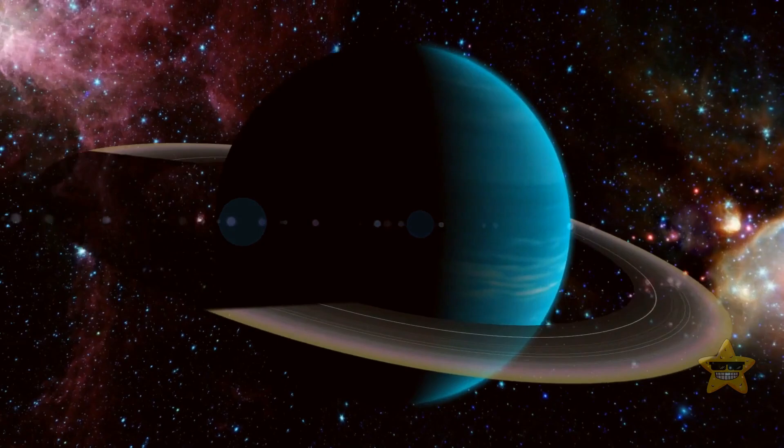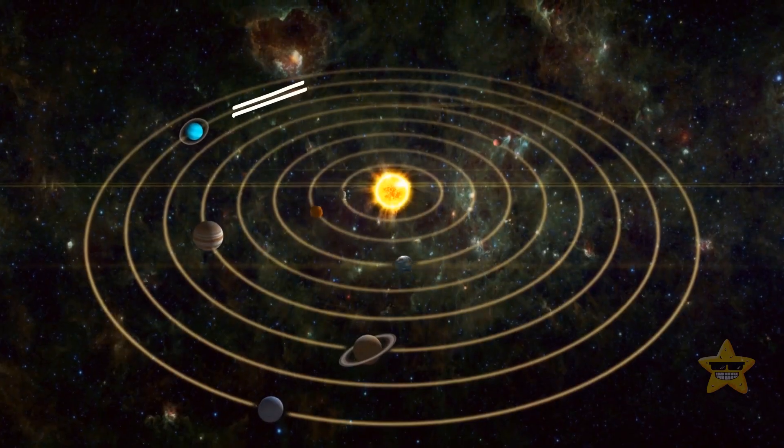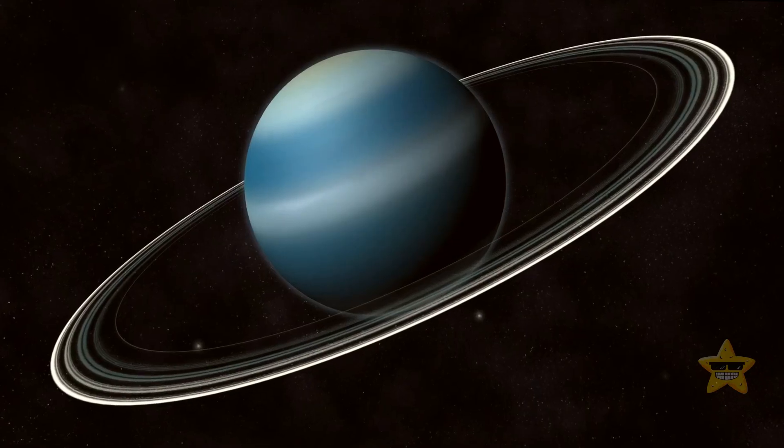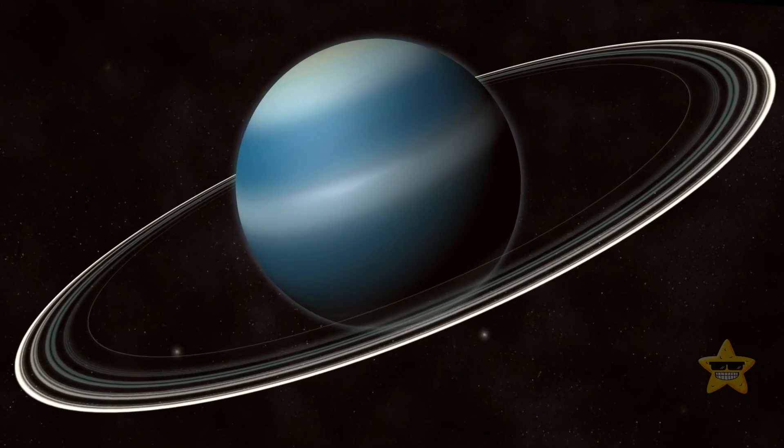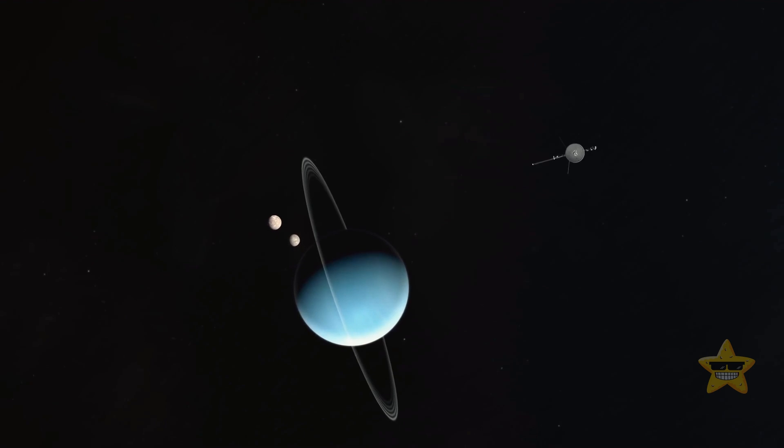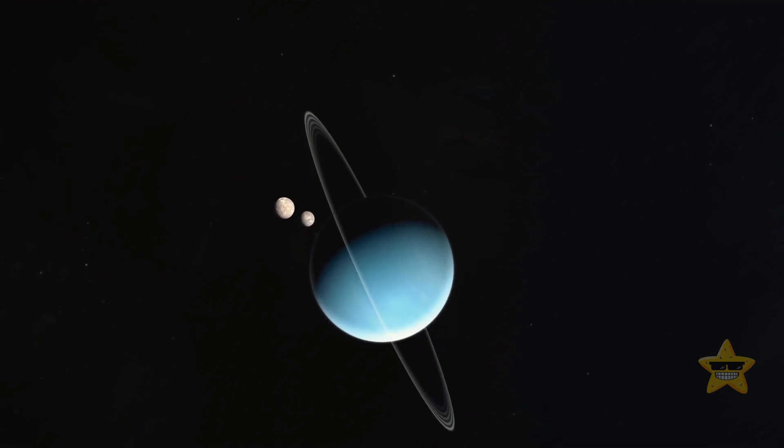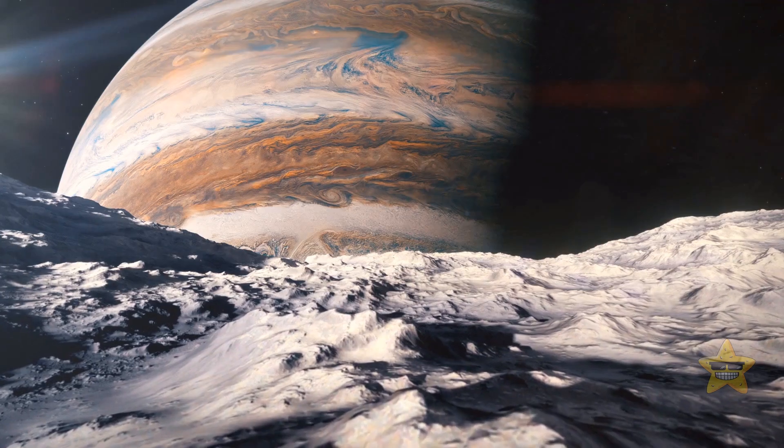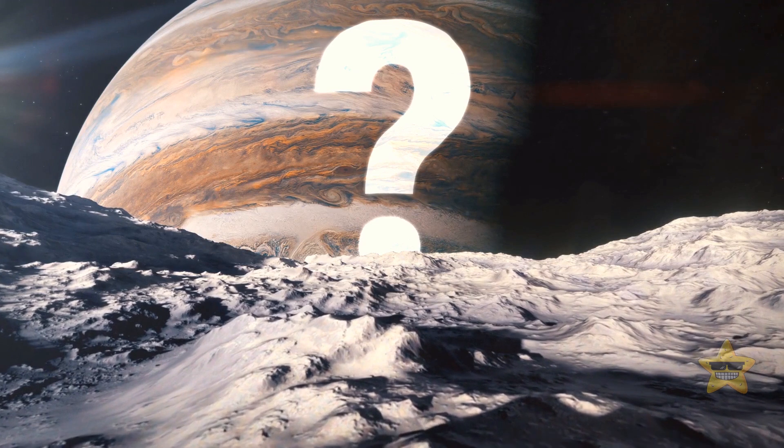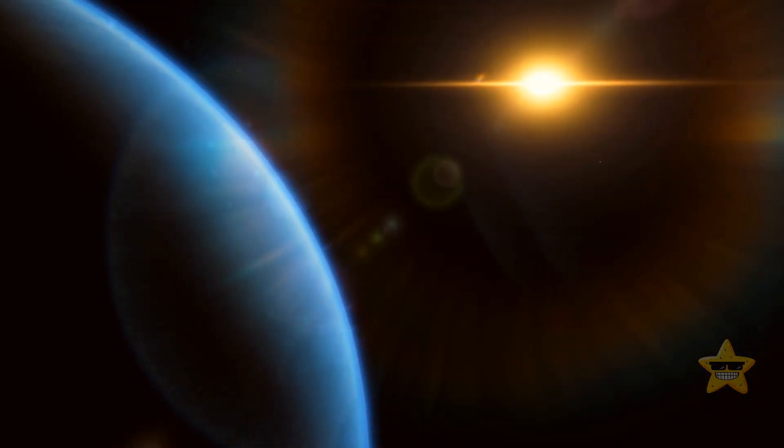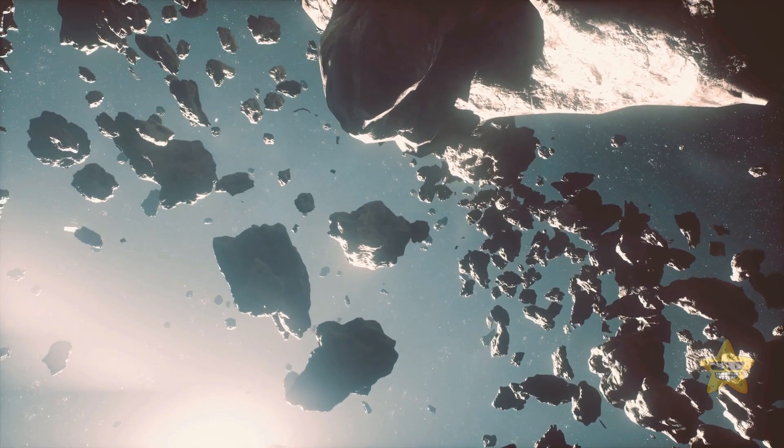There's a theory that Uranus didn't form where it is today, which is 20 times farther from our sun than Earth. At this distance, there wasn't enough material to make the whole planet. That's why there's an idea that Uranus was born closer to the sun before it got ejected farther away for some reason. Maybe that reason was the mess Jupiter and Saturn made.